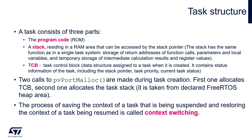Let's have a closer look at the task structure. A task consists of three parts: the program code located in flash and two RAM areas. A stack, which can be accessed by the stack pointer and holds all the temporary variables used by the task during its execution. The second RAM area used by the task is the so-called Task Control Block, TCB, which is in fact the data structure assigned to the task during its creation. It contains its status, information of the task including the stack pointer, task priority, current task status, and the connection between the task and other OS components like mutex access. We need two calls of pvPortMalloc — two memory allocations — during the first task creation: the first one allocates the Task Control Block, the second one allocates the task stack.